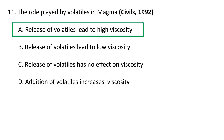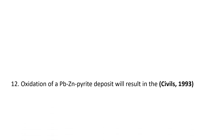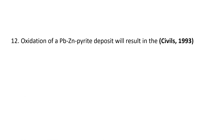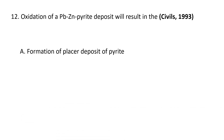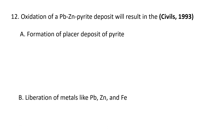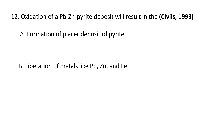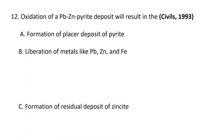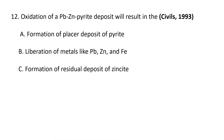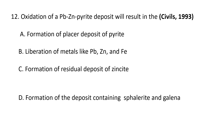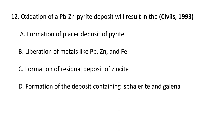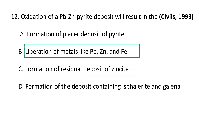Next question: Oxidation of a lead-zinc-pyrite deposit will result in A. Formation of placer deposit of pyrite, B. Liberation of metals like lead, zinc, and iron, C. Formation of residual deposit of zincite, D. Formation of deposit containing sphalerite and galena. The correct answer is B — liberation of metals like lead, zinc, and iron.